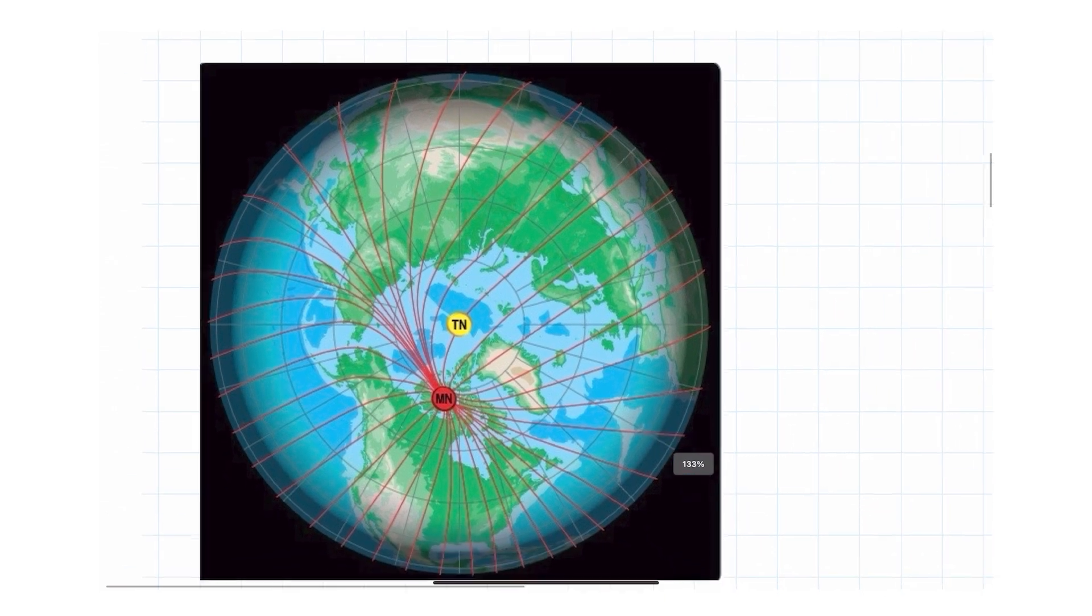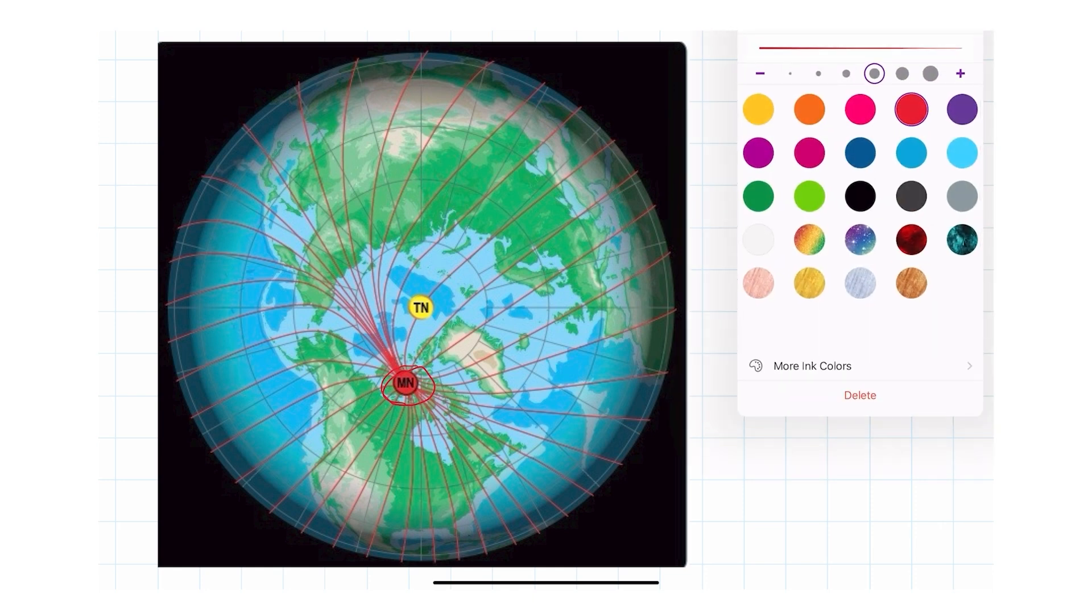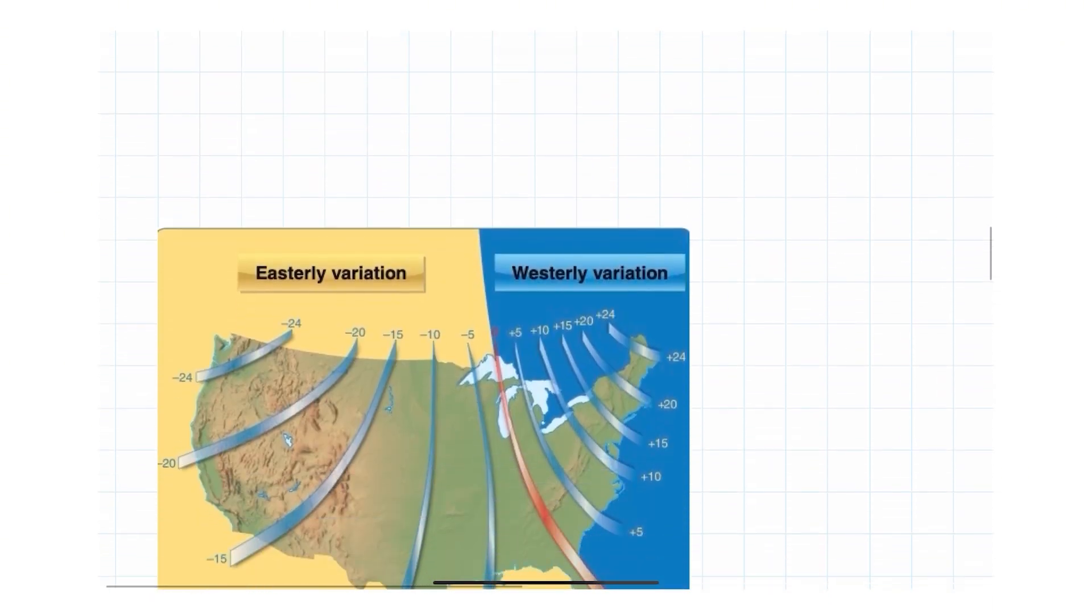Anyway, we have the North Pole, true north, which is where Santa lives. And we've got magnetic north that is south. I should look it up. I think it's around 1300 miles south at Prince of Wales Island. That's where magnetic north is. So we've got magnetic north, which is always shifting, always moving. I don't know how much a year. And then we've also got true north right there.